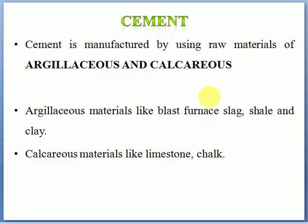Everyone knows about cement, but let me give a small introduction. Cement is manufactured by using raw materials. I will speak in Hindi because viewers from all states watch — Hindi is understood by everyone. Cement is manufactured using argillaceous and calcareous materials. Argillaceous materials include blast furnace slag, shale, and clay. Calcareous materials include limestone and chalk — these are used in cement manufacture.